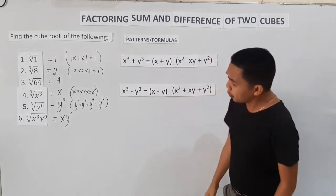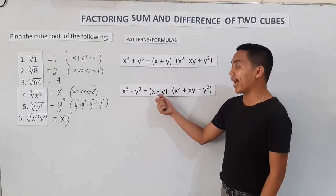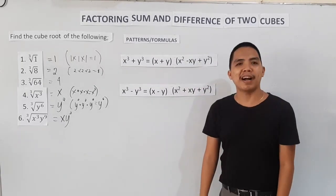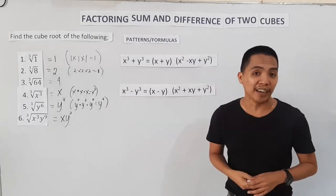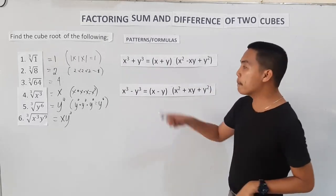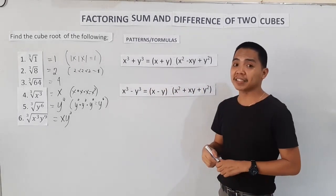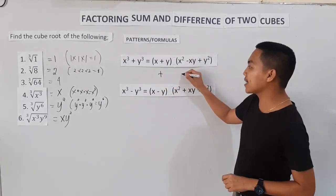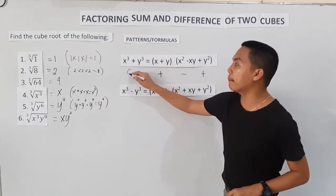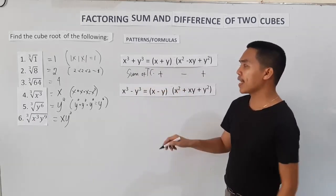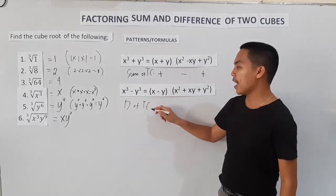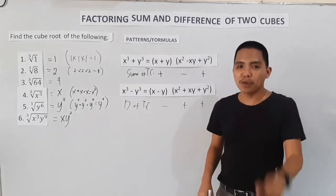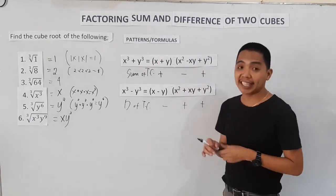For x³ minus y³, the factors are (x minus y) and (x² plus xy plus y²). If you observe, the variables in the answer are the same — they differ only in the operations used. For the sum of two cubes: plus, minus, plus. For the difference of two cubes: minus, plus, plus. You have to familiarize these operations because we will follow them.